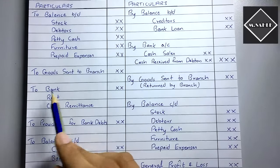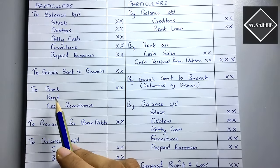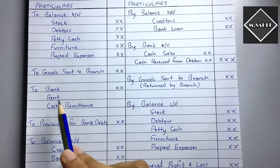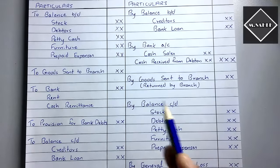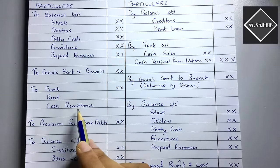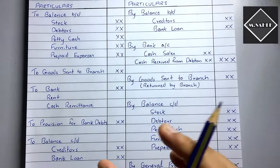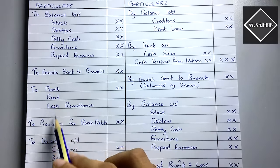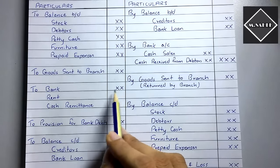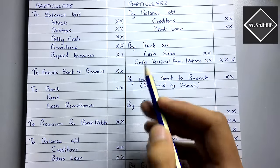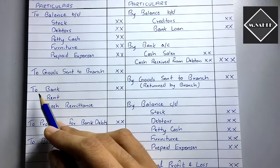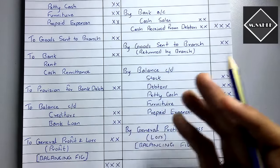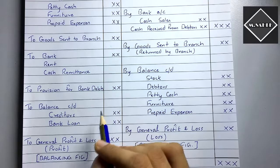Next is 'To Bank' — these are expenses paid by the head office on behalf of the branch, such as rent, salaries, freight, wages, and daily petty cash sent for branch maintenance. All these expenses are debited as 'To Bank.' If there is any provision for bad debts given in the question, it is also debited on the branch account.